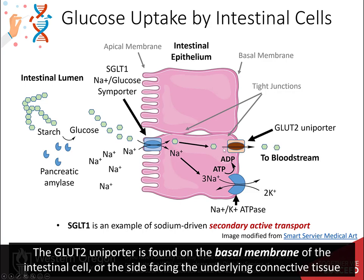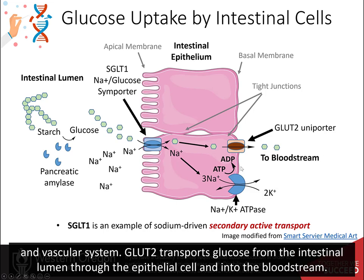The GLUT2 uniporter is found on the basal membrane of the intestinal cell, on the side facing the underlying connective tissue and vascular system. GLUT2 transports glucose from the intestinal lumen through the epithelial cell and into the bloodstream.